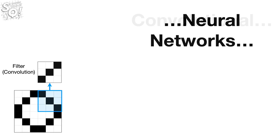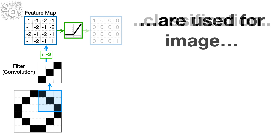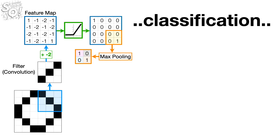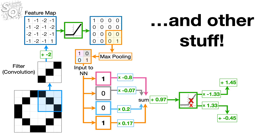Convolutional Neural Networks are used for image classification and other stuff.